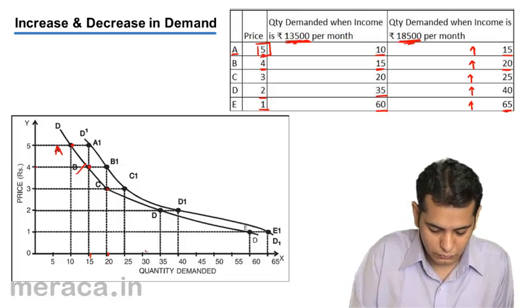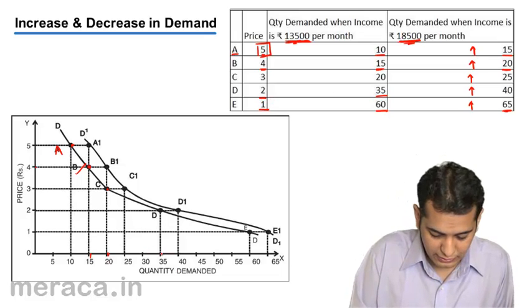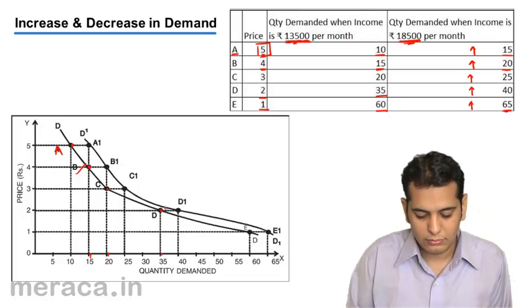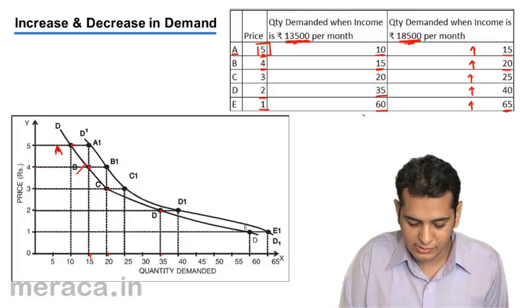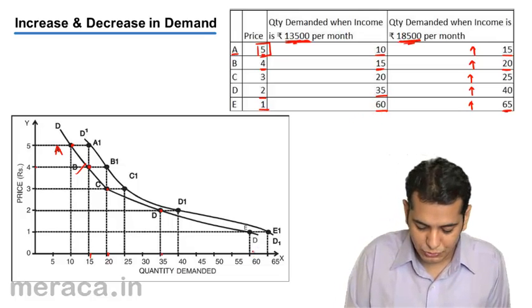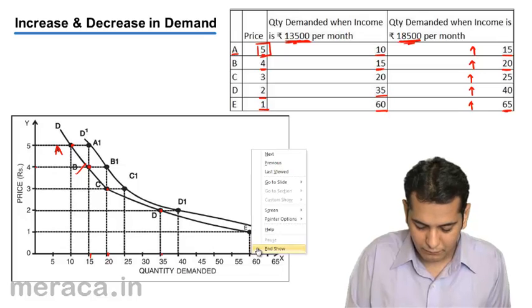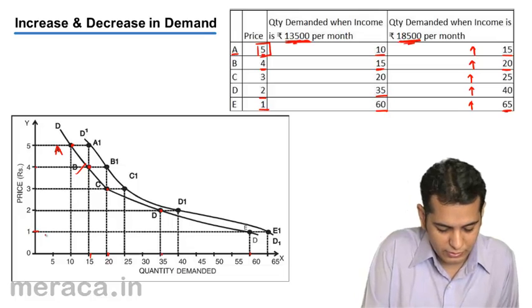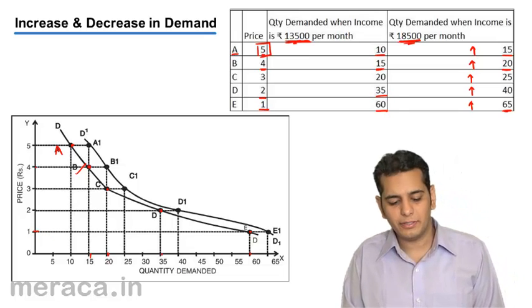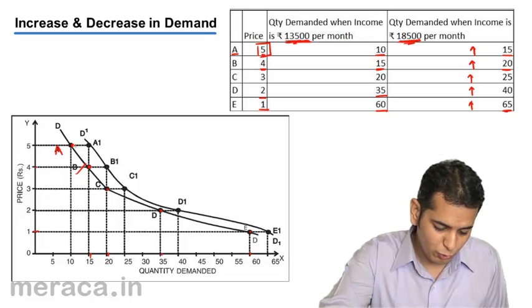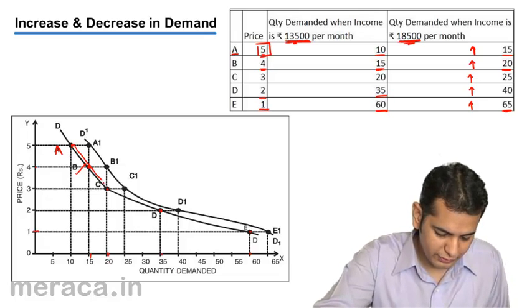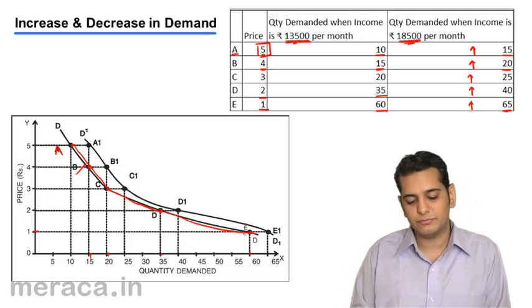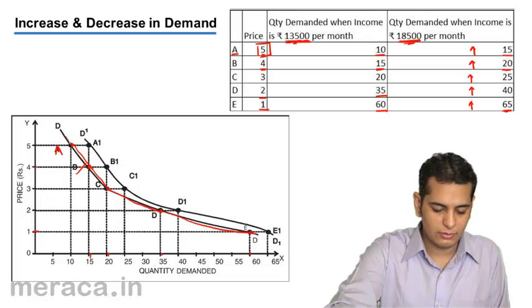35 and 2 - the consumption has increased to 35 when the price has fallen to 2. This is point D. And finally, 60 and 1 - the consumption rises to 60 at a price of Rs. 1. This is point E. When we join all these points, we get a demand curve.